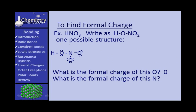Now let's look at nitrogen. Stop for a minute and try to figure out its formal charge — pause the video if you want. Did you get a positive one? Nitrogen has five valence electrons but is only responsible for four — one from each of its four bonds — therefore giving it a formal charge of positive one.